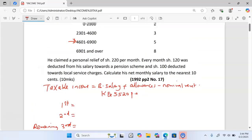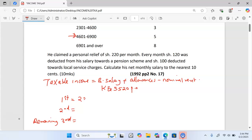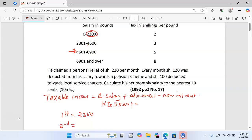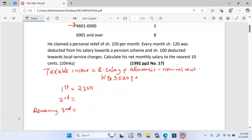Remember, we tax the maximum. The maximum in the first bracket is 2,300. For the second bracket, we take the maximum second minus maximum first: 4,600 minus 2,300, which gives 2,300.